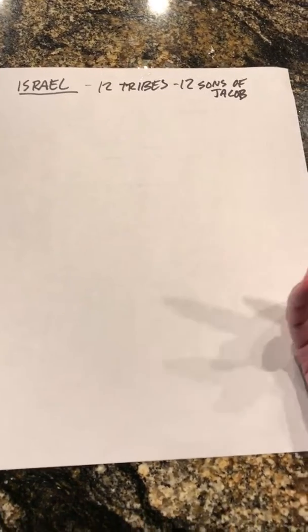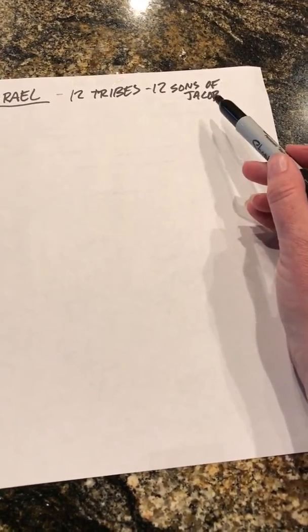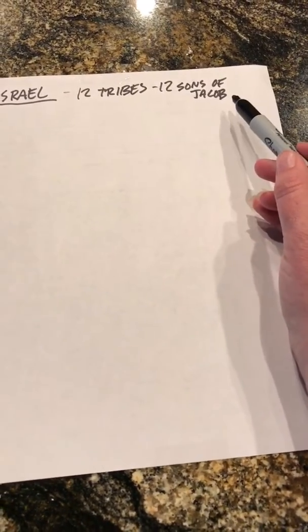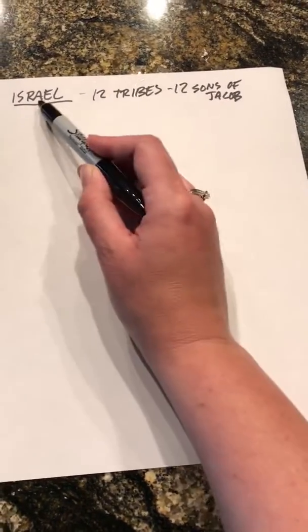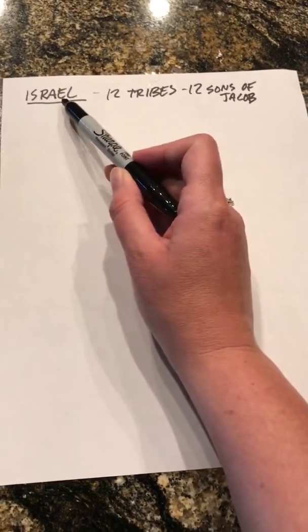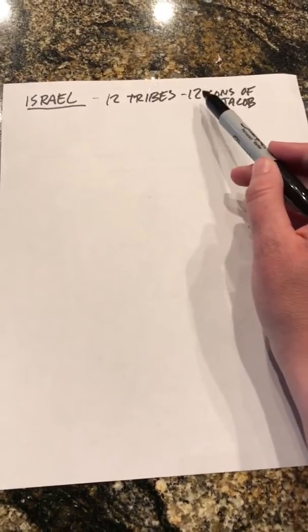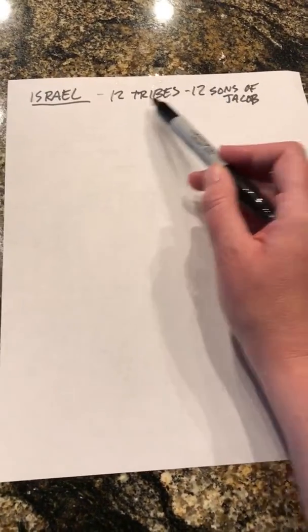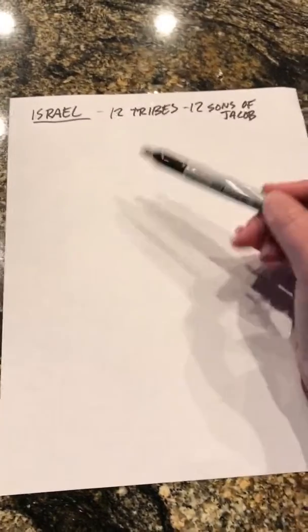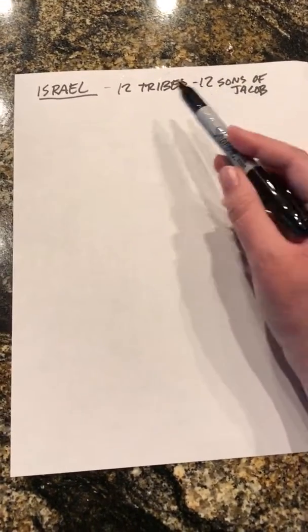God was with each of them, and it says that Jacob wrestled with God one night. After the wrestling match, God renamed him Israel. When you're talking about the nation of Israel, it really became that because Jacob was renamed Israel, and it was his 12 sons that were given the land of Israel, divided up into 12 pieces for each son.